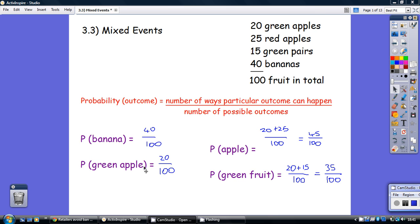Chances of a green apple, how many green apples have we got? 20. How many bits of fruit have we got? 100. So that's 20 out of 100. Chances of an apple, well, how many apples are there? 20 green ones plus 25 red ones. So that's 45 apples out of 100 fruit. That's 45 out of 100, written as the probability of this being 45 over 100.